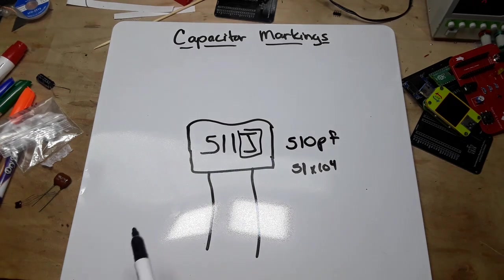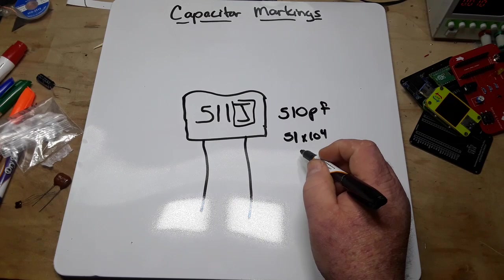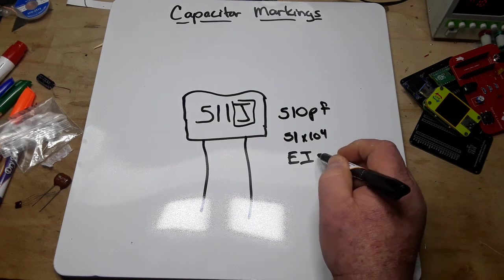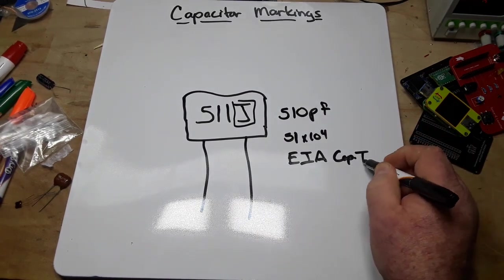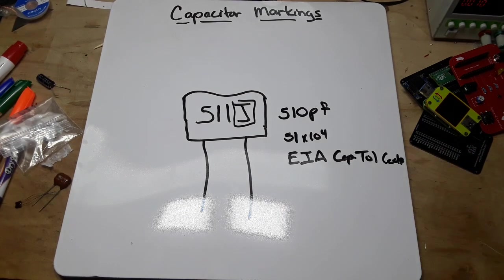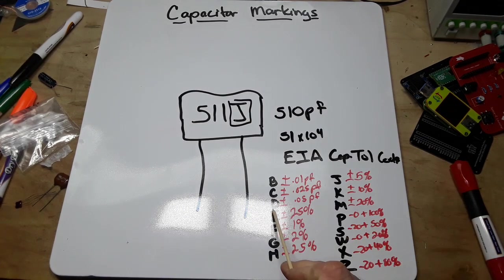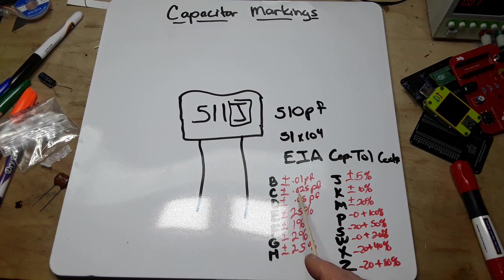Now the J on the other hand is part of what is known as your EIA capacitor tolerance codes. They are as follows - this can get a little confusing because there's kind of a cutoff here after D. So B is plus or minus 0.1 picofarad, C is plus or minus 0.25 picofarad, D is plus or minus 0.5 picofarad.